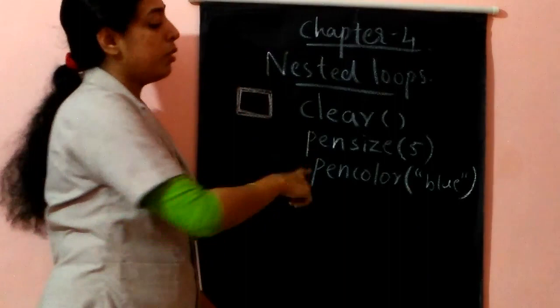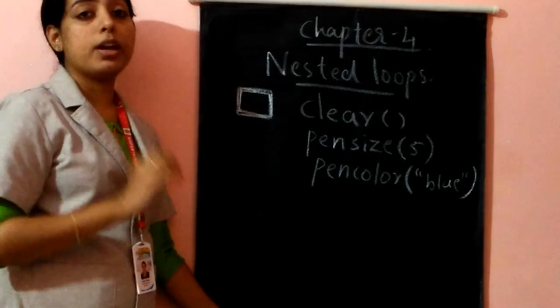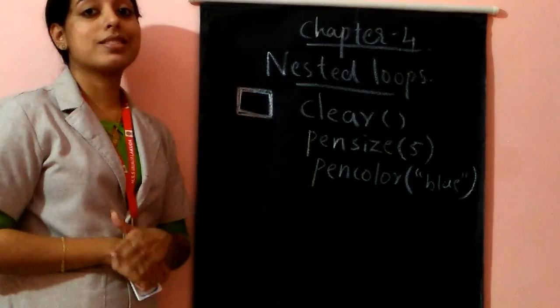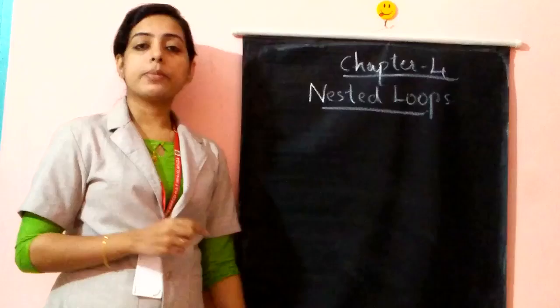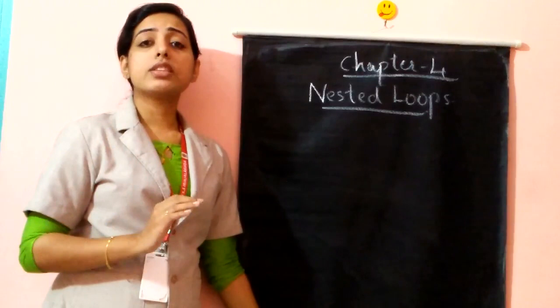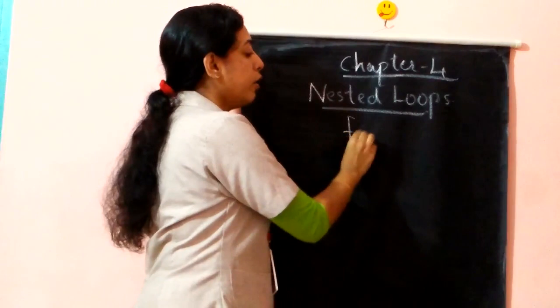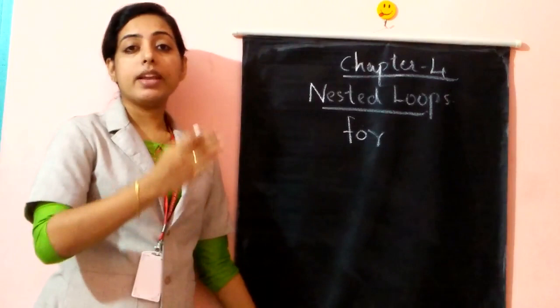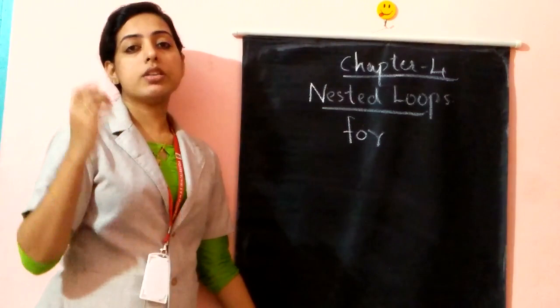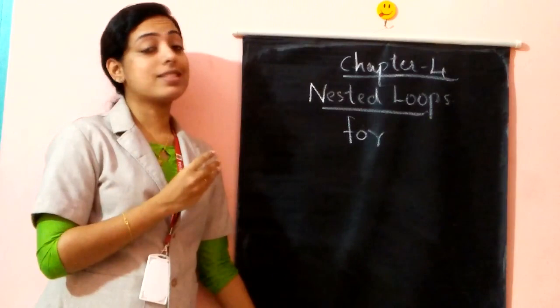Now we are moving to the activity — how nested loops work. What do we mean by nested loop? We have been using the for loop statement to execute our programs. Inside that for loop statement, we are going to use another for loop. So two different loops in one program — that is what is known as nested loops.